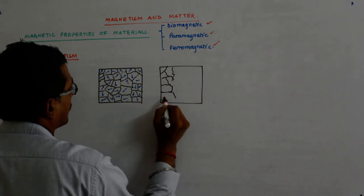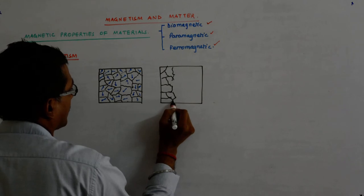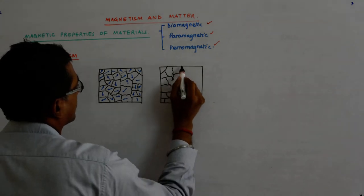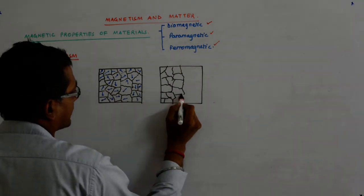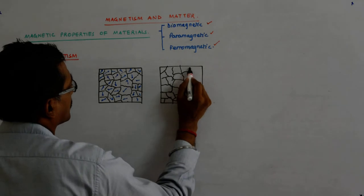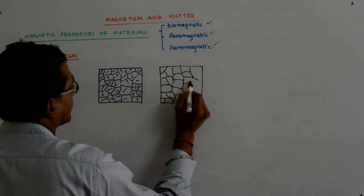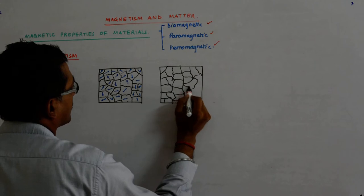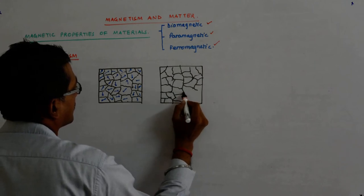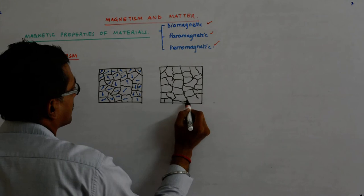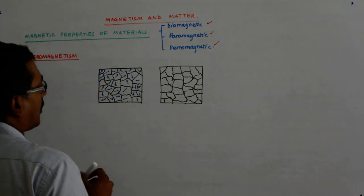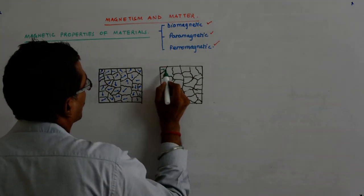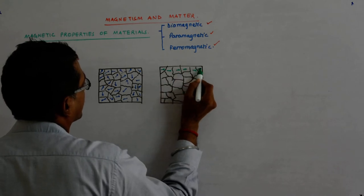The domains' size does not change. In the influence of a magnetic field, all of them more or less get aligned in the same direction.